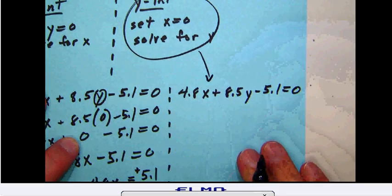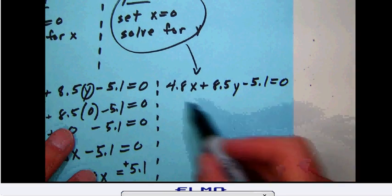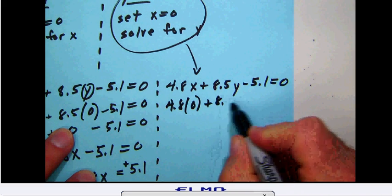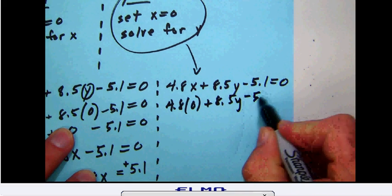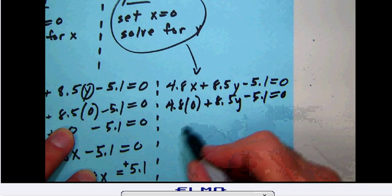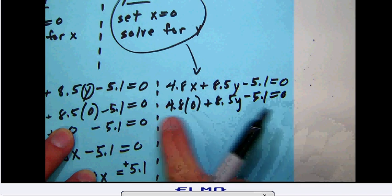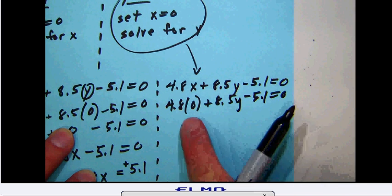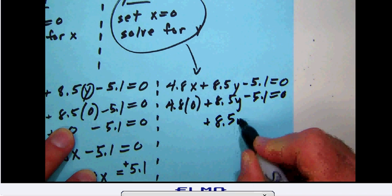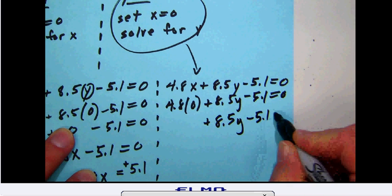So down in our equation we'll recopy that equation, and this time we'll put in an x of zero plus everything else as before. But zero times the 4.8 is zero, which is going to just go away because adding zero to a number isn't going to change that. So we're going to have 8.5y minus 5.1 equals zero.